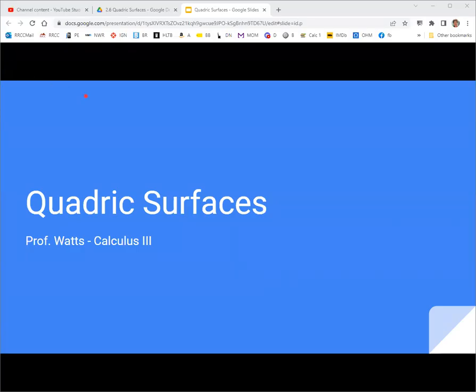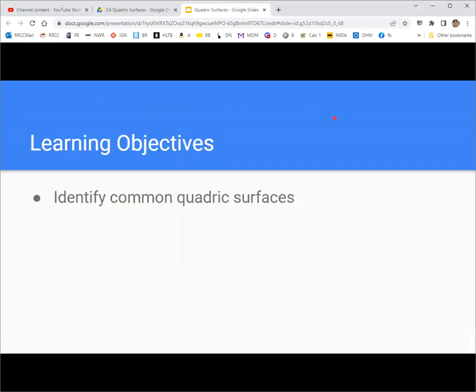In this video we're going to look at quadric surfaces. This goes with section 2.6 of the OpenStax textbook for calculus volume 3. I'm going to try to identify some common quadric surfaces. You might want to do a quick review of conic sections in two dimensions because this is the three-dimensional analog of that.